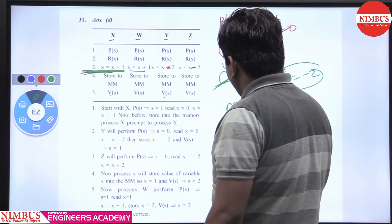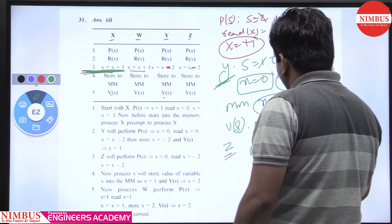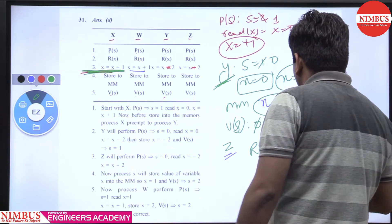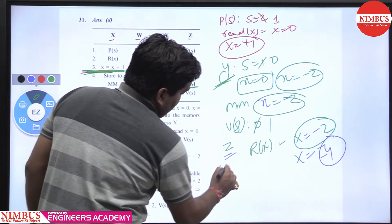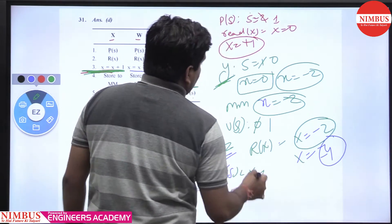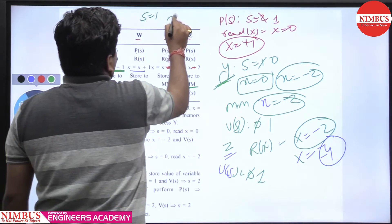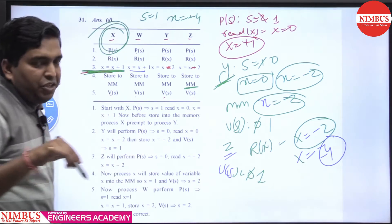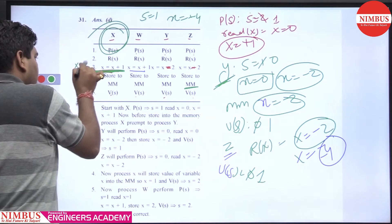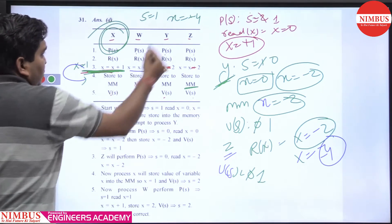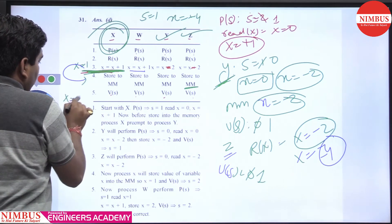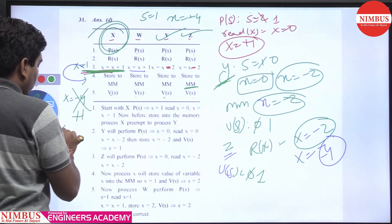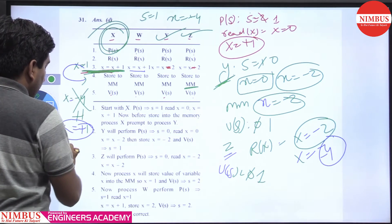After y, we execute z which reads x equal to minus 2, decrements by 2 giving minus 4, and stores in main memory. V(s), s becomes 0 to 1. Right now the value of s is 1 and x equals minus 4. Now we resume process x: it had read x equal to 0, increments to plus 1. When it finishes, the value x equals minus 4 is overwritten by plus 1 and stored in main memory. So x equals plus 1. V(s) is performed.